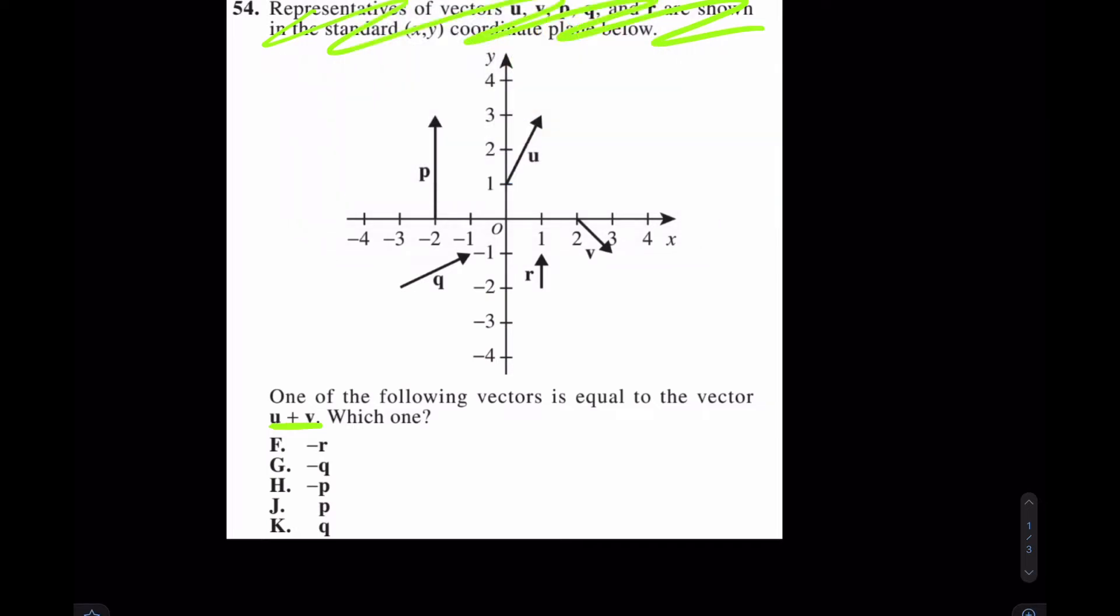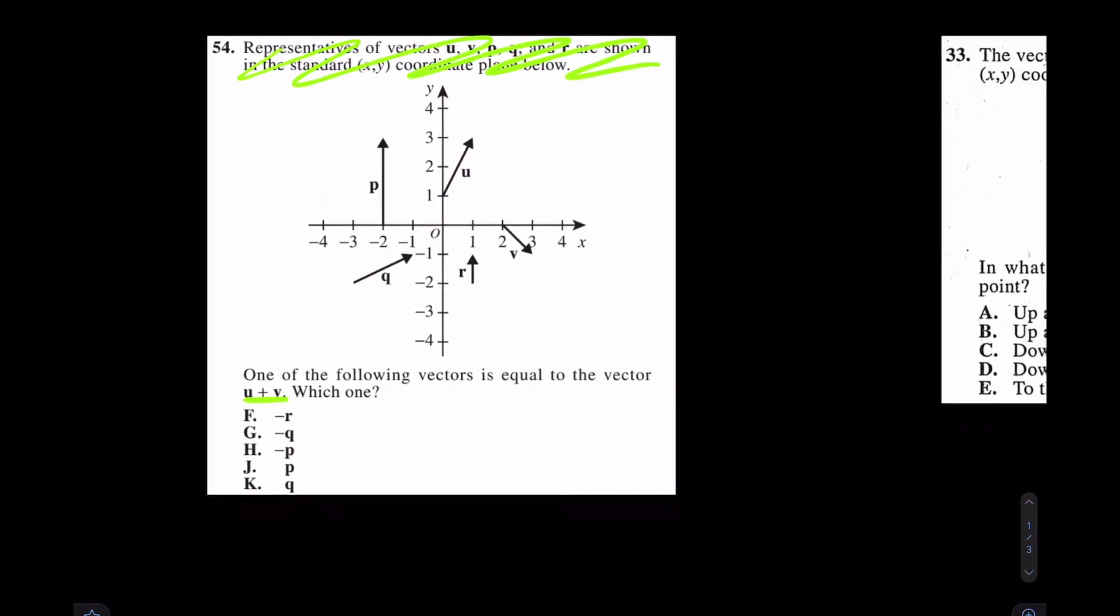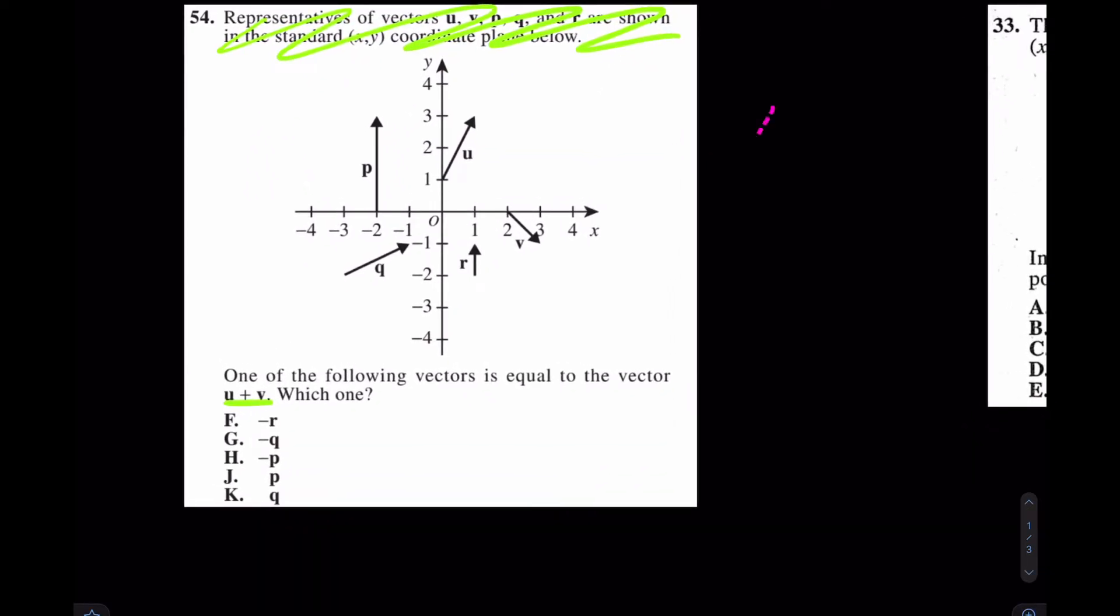If I'm going vector u, and I'll do this off to the right hand side, if I'm going vector u, and then I go vector v from there. What is that the same as? That is the same as me going vector which one?